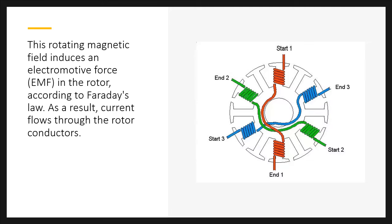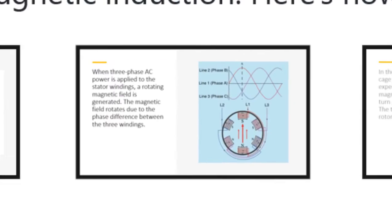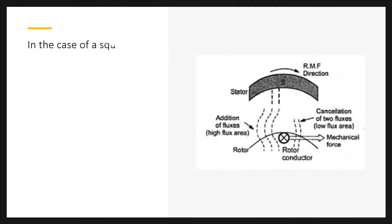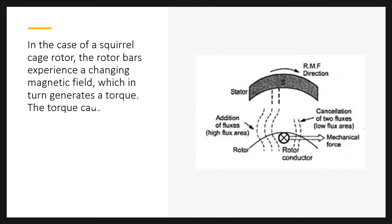As a result, current flows through the rotor conductors. In the case of a squirrel cage rotor, the rotor bars experience a changing magnetic field, which in turn generates a torque. The torque causes the rotor to start rotating.